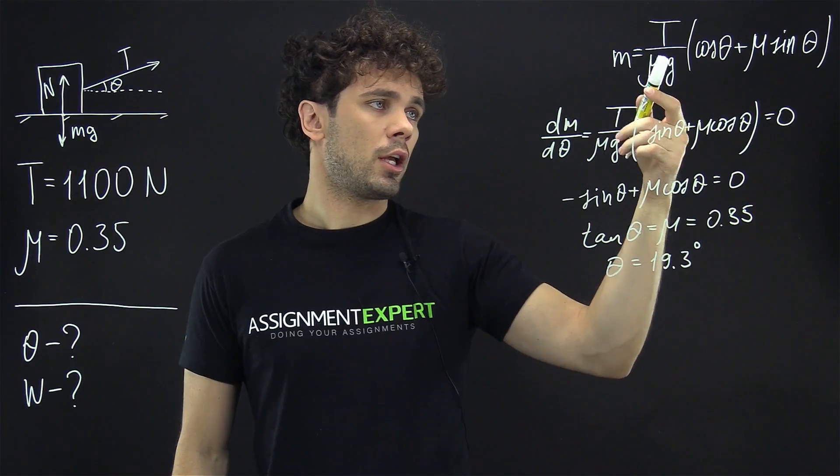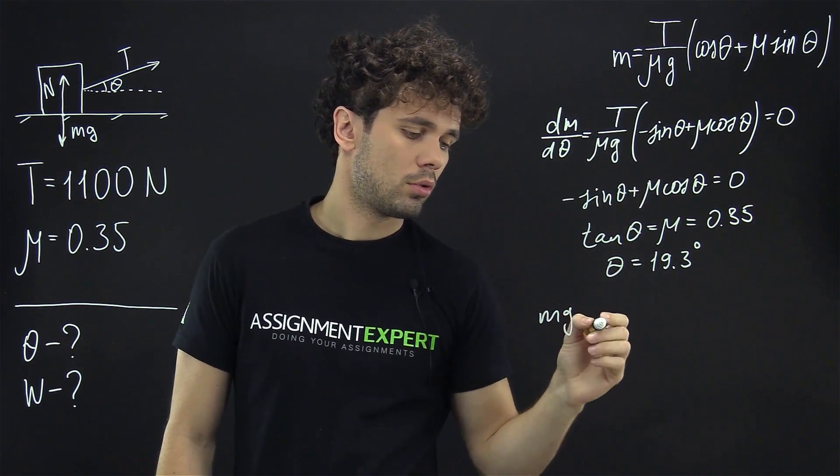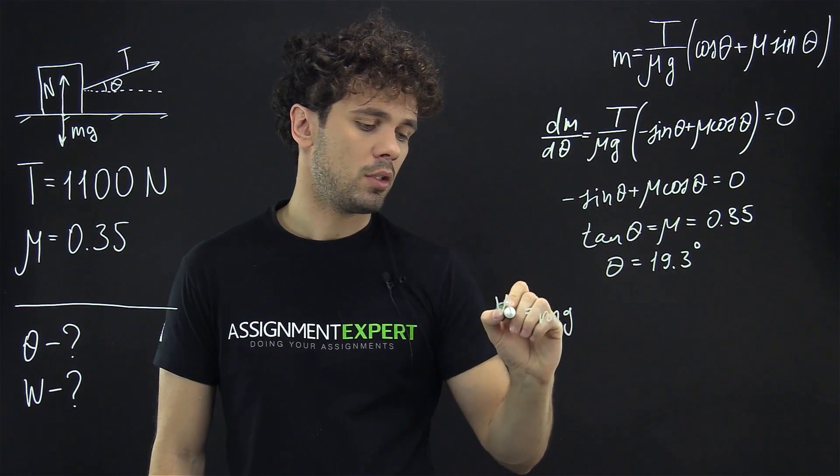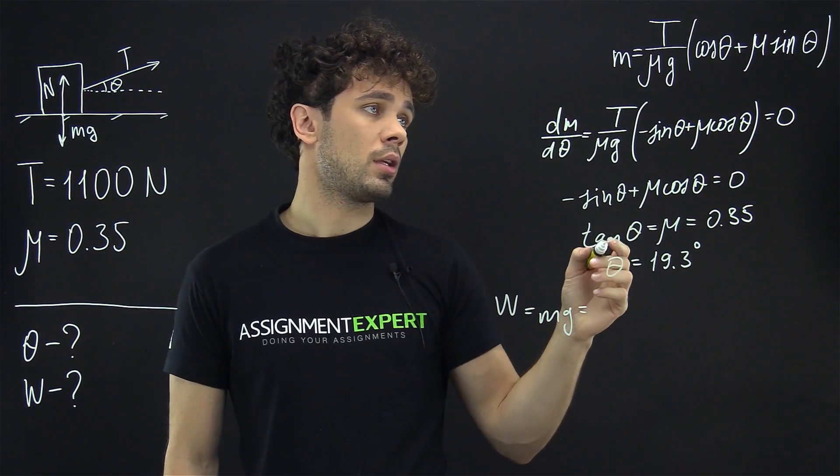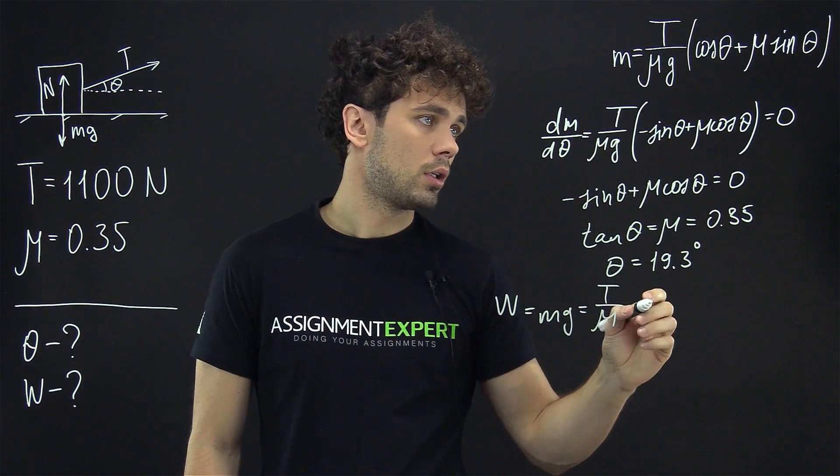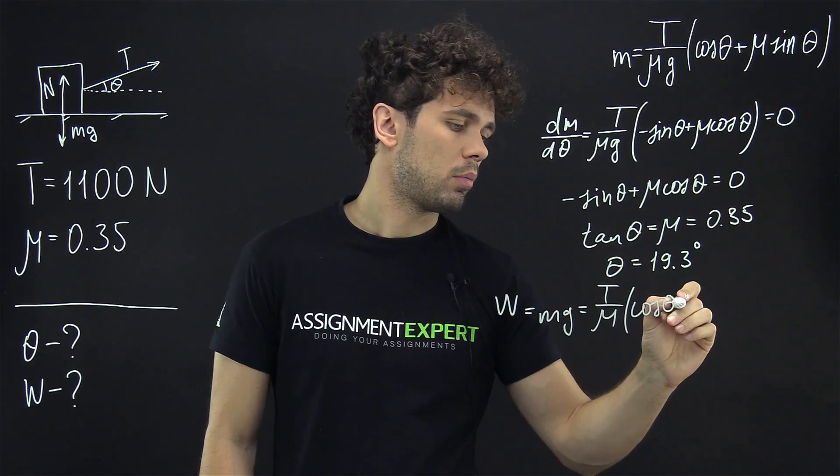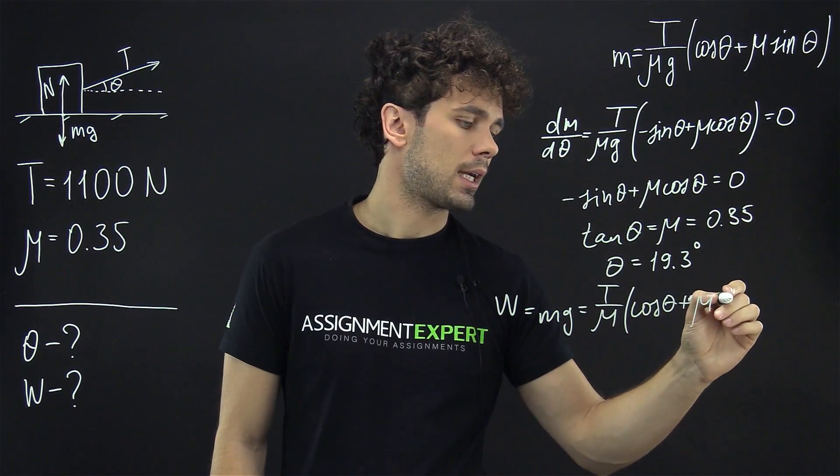So we will take g and move it to the left side. Mg, this is obviously the weight, and it is equal to T over mu times cosine of theta plus mu times sine of theta.